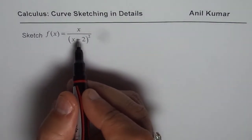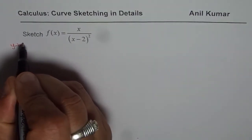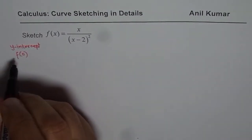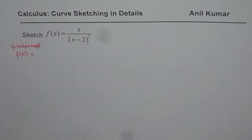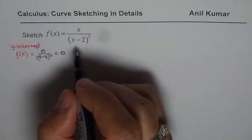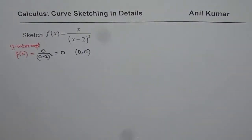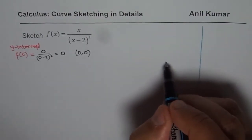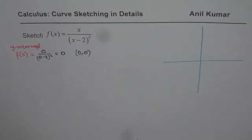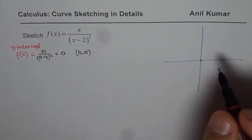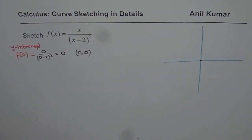We begin with x and y intercepts. The y intercept is the point where x = 0, so we find f(0) = 0 / (0 - 2)² = 0. So the y intercept is (0, 0). As we gain information about the graph, we will keep plotting simultaneously. The first point, which is both the x and y intercept, is at the origin.